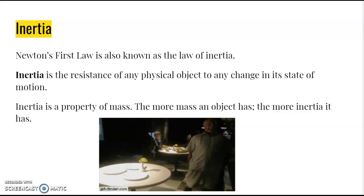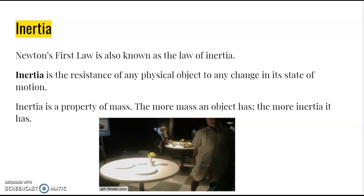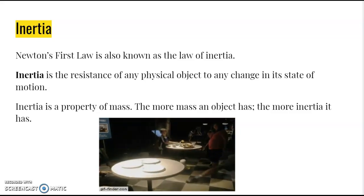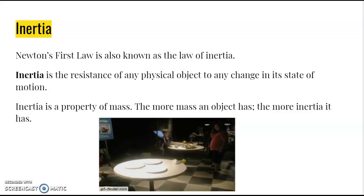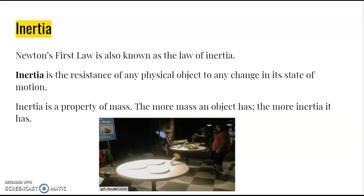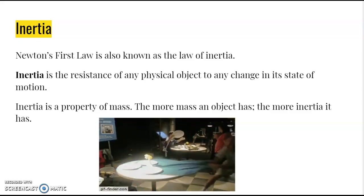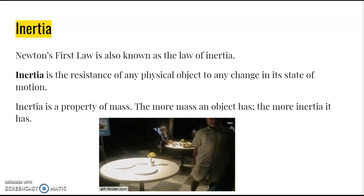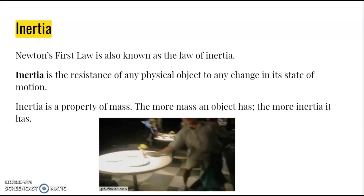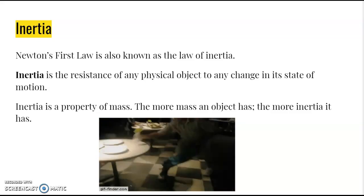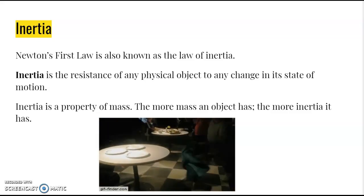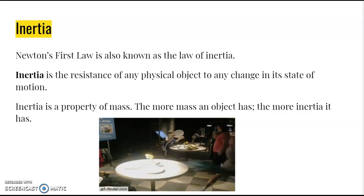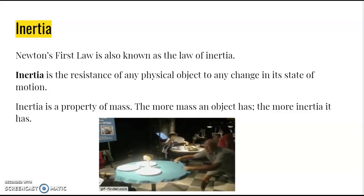A very common example of this is the tablecloth and table settings trick. This person can easily change the motion of the tablecloth because the tablecloth is lightweight and he's directly acting on it. The plates want to remain where they are — they're still, and they want to remain still. This is because they have inertia. The vase has a little less inertia than the plates because it has less mass, so the tablecloth moves the vase more easily than the plates.